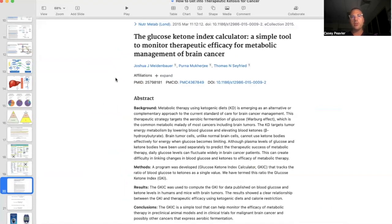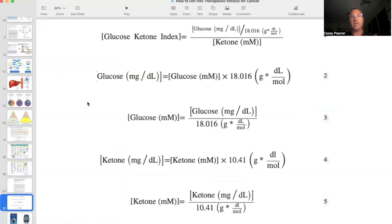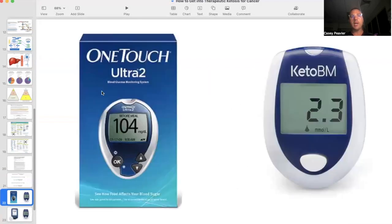what Dr. Seyfried and his group created was something called the glucose ketone index or the GKI. And the GKI is a cool way of understanding where you are on the ketosis scale. And what they have is basically calculations. What you do is you take your glucose in milligrams per deciliter, you convert the units and divide it by your ketones and you have your GKI.